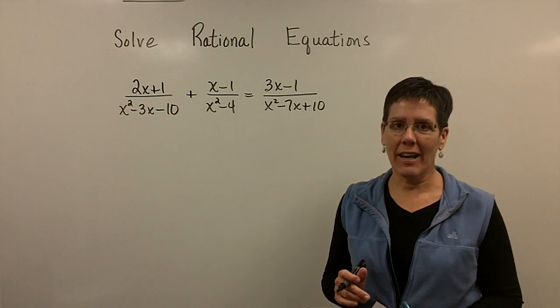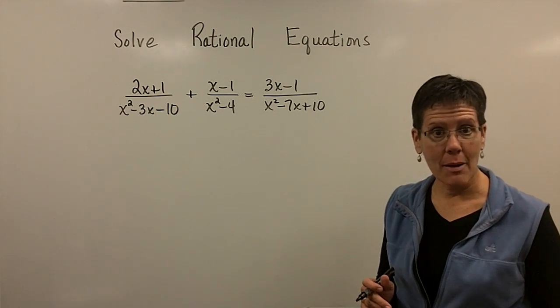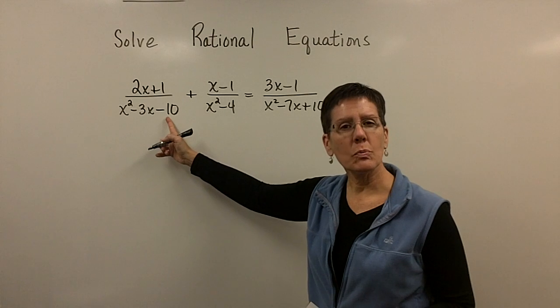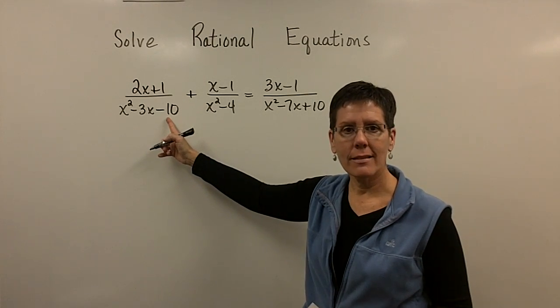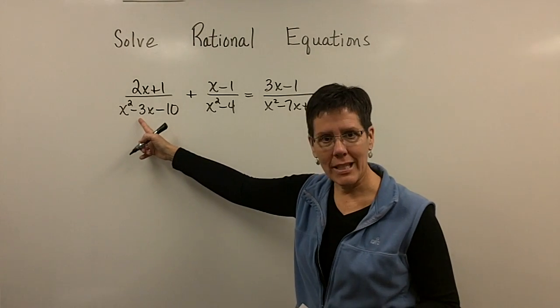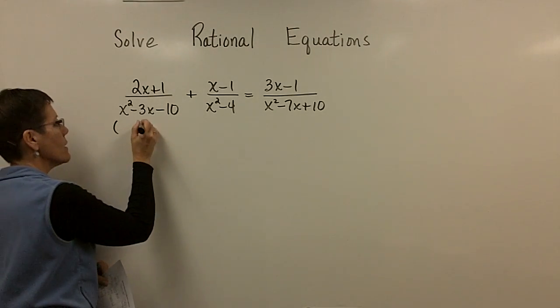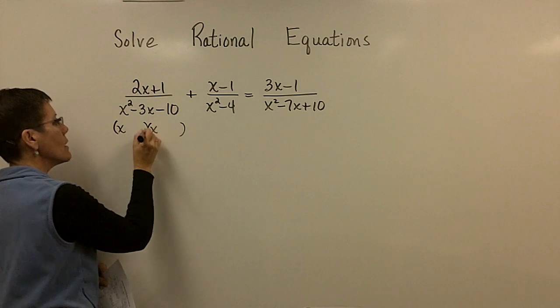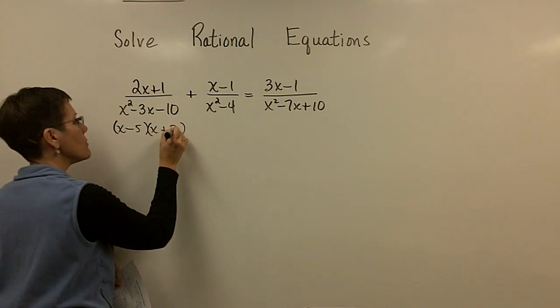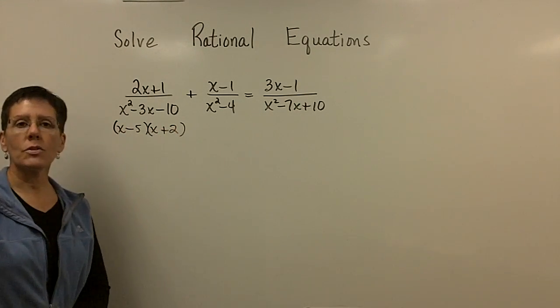Remember, you've got to factor the denominators in order to find the least common denominator. So I'm thinking that the two numbers whose product is negative 10 and adds to be negative 3, I think those are negative 5 and positive 2.